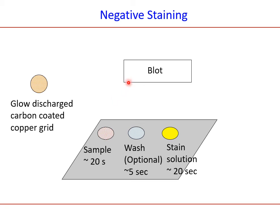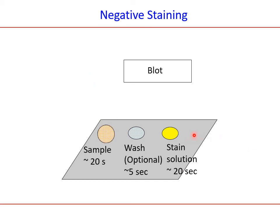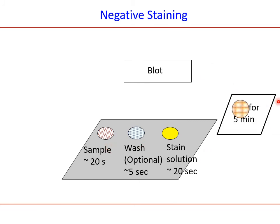The sequence is: the glow-discharged grid is placed on the sample droplet, then blotted, and before it dries completely it is moved to the wash. Remember: while moving from sample to blot to wash the sample should not dry completely. After the wash the same step is repeated — the wash is blotted and before completely blotting it is placed on the stain for about 20 seconds. After staining it is left to dry. The flow is: sample → blot → wash → blot → stain → dry.